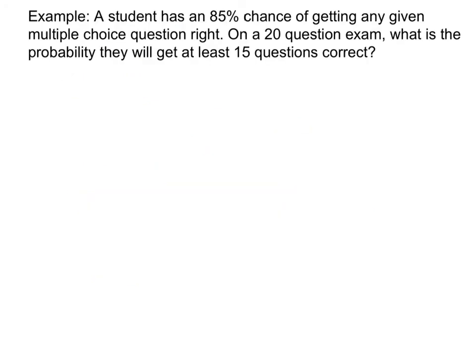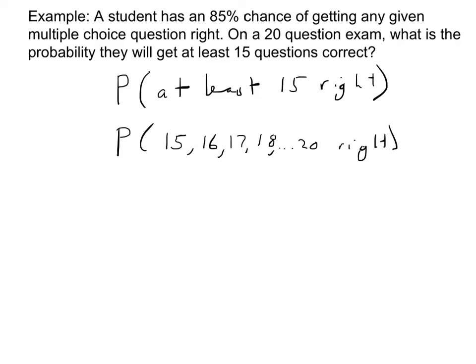In the next example, I'm going to sort of go through an example that's like that. So for this example, a student has an 85% chance of getting any given multiple choice question right. On a 20 question exam, what is the probability that they will get at least 15 questions correct? So what I really recommend here is write down what they want. They want the probability of at least 15 right. So this means the probability of 15 or 16 or 17 or 18 on up to 20 right. So we already have a feeling like, oh, I'm probably going to use CDF for this, but this is so important. CDF will only add up from 0 up to something. It will not add up from 15 to 20. It will only add up from 0 up to something. So I need to find a way to take this probability and rewrite it adding up from 0 to something.